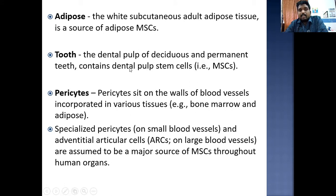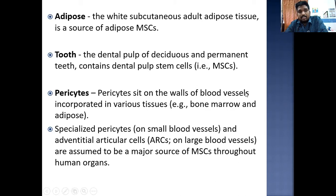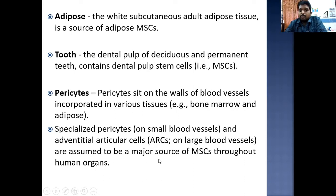Additionally, the dental pulp of deciduous and permanent teeth contains dental pulp stem cells, which are mesenchymal stem cells. Pericytes, which sit on the walls of blood vessels incorporated in various tissues such as bone marrow and adipose tissue, are also a source. Specialized pericytes on small blood vessels and adventitial cells on large blood vessels are assumed to be a major source of mesenchymal stem cells throughout human organs.